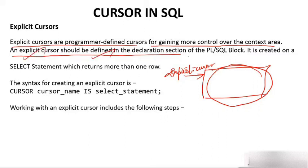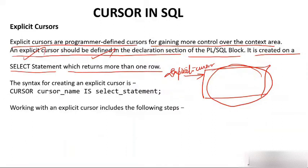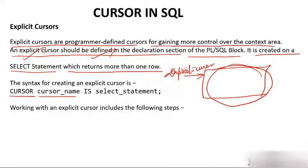Explicit cursor is defined in the declaration section of a PLSQL block. It is created on a SELECT statement which returns more than one row. The syntax for creating an explicit cursor is: CURSOR cursor_name IS select_statement. The cursor name can be anything — for example, John, Ala, Jasmine, etc.